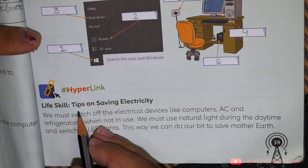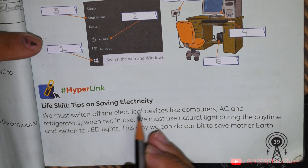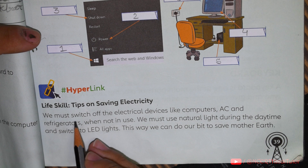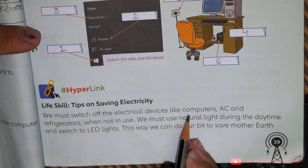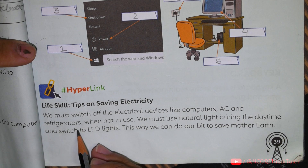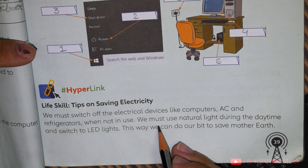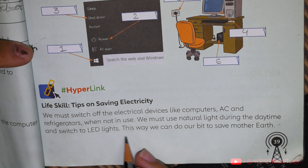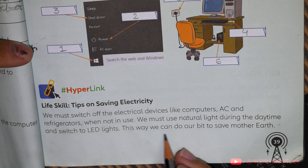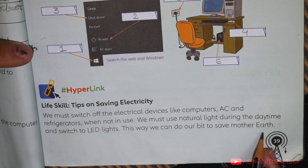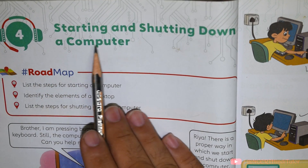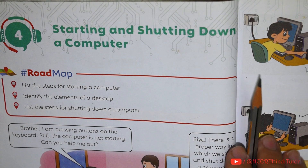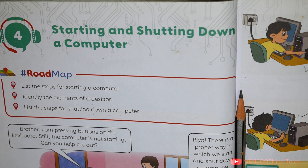Hyperlink: Life skill tips on saving electricity. We must switch off electrical devices like computers, AC, and refrigerators when not in use. We must use natural light during the daytime and switch to LED lights. This way, we can do our bit to save Mother Earth. Friends, Chapter 4 on Starting and Shutting Down a Computer is complete. If you like the video, kindly like it, share it, and subscribe to the channel. Thank you for watching.